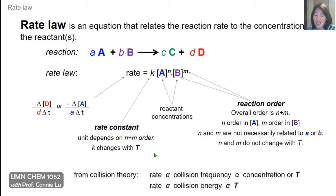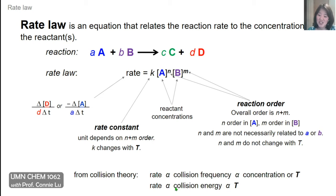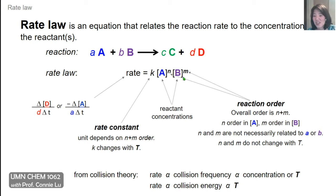The fact that temperature appears in this rate law shouldn't be surprising. From collision theory, raising temperature increases collision frequency, which increases rate. Raising temperature also raises collision energy, which is also beneficial to rate. This temperature dependence is captured in the rate constant K. It's important that K is a function of temperature, because the concentration and reaction order are not.